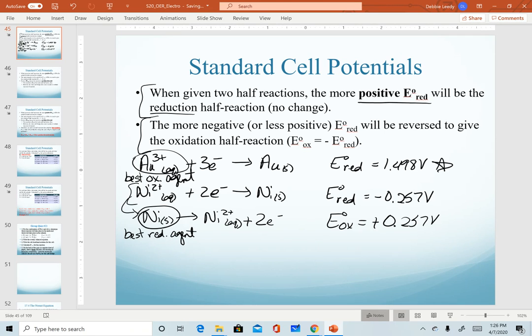So the net result is when you're given two half reactions, the more positive reduction potential will remain as reduction, the more negative or less positive reduction potential will be reversed to generate the oxidation half reaction.